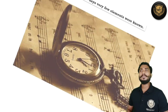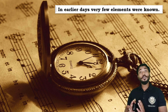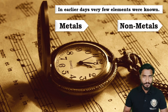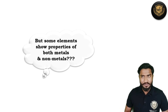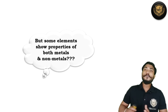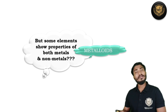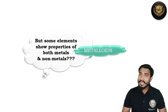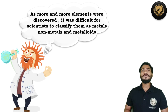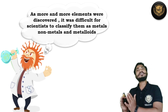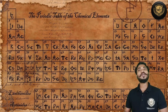Today we are aware of 118 elements, but in earlier times there were very few elements and those were classified into two simple types: metals and non-metals. But slowly and gradually more elements got discovered, and those elements showed properties of both metals as well as non-metals. Those elements were termed as metalloids — elements that have both the properties of metals and non-metals. As several more elements got discovered, it became very difficult to classify them, so scientists decided there had to be a systematic arrangement.